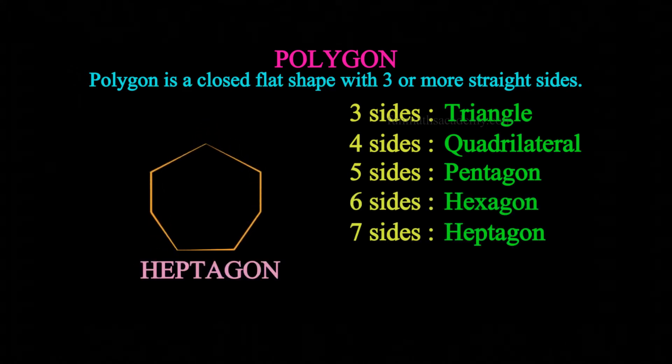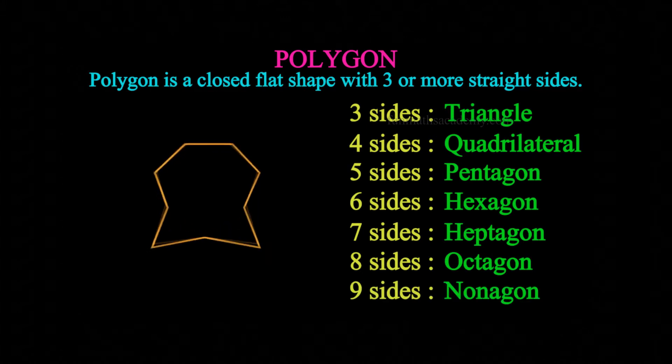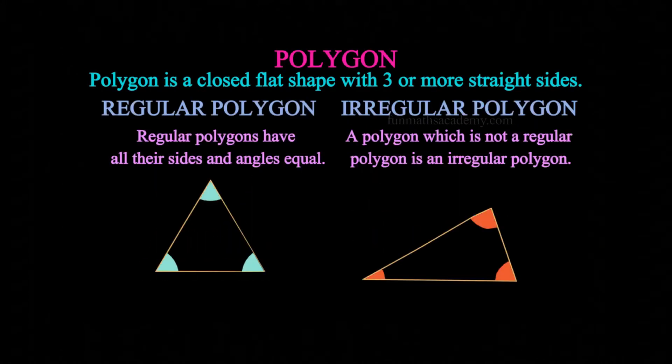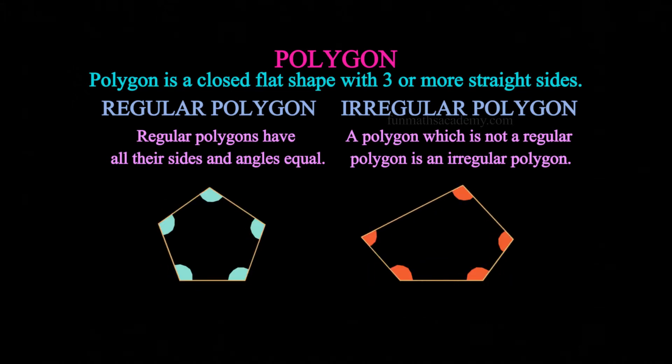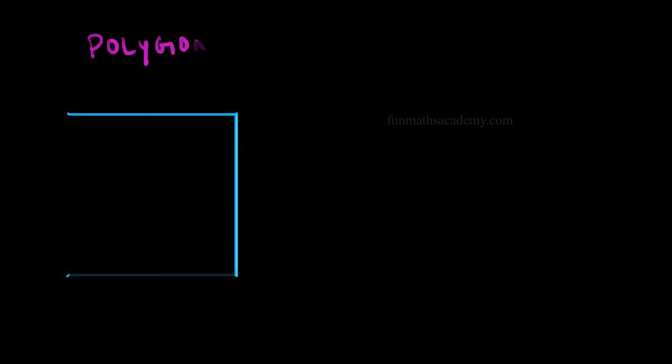We ended that video by saying we will learn more about polyhedron which comes from a polygon. Well, how does that happen? How do you create a polyhedron from a polygon? From this 2D shape.